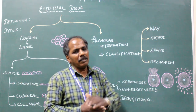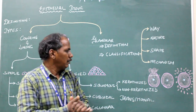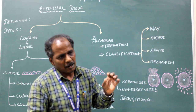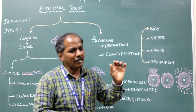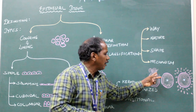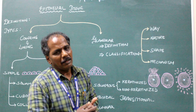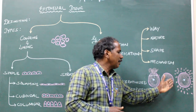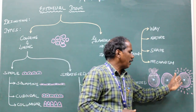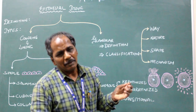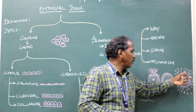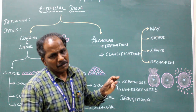Depending upon the mechanism of secretion — how the secretion comes out — glands are divided into apocrine and other types. In apocrine secretion, the apical portion of the cell comes out as secretion. In holocrine secretion, the entire cell comes out as secretion. In merocrine secretion, the secretion takes place by a process known as exocytosis, where the cytoplasm comes out of the cell membrane as droplets. Thank you.